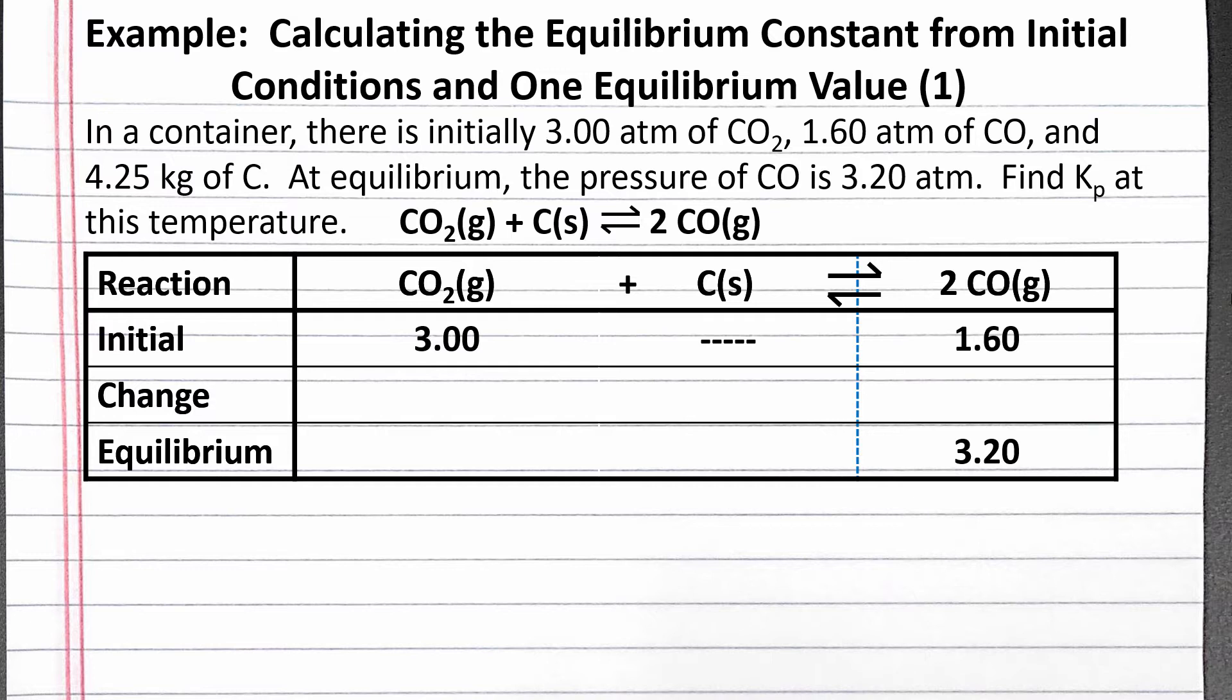This allows us to determine the direction the reaction shifts to reach equilibrium. Since the equilibrium pressure of our product, carbon monoxide, is greater than its initial pressure, we know the reaction shifted to the right, producing more product, to reach equilibrium.